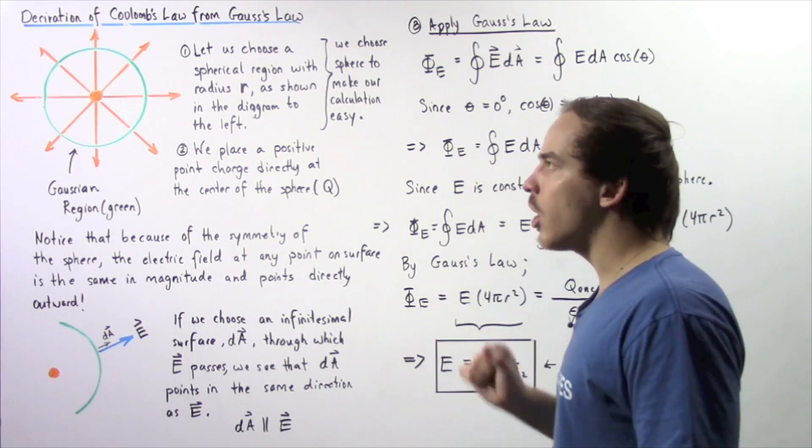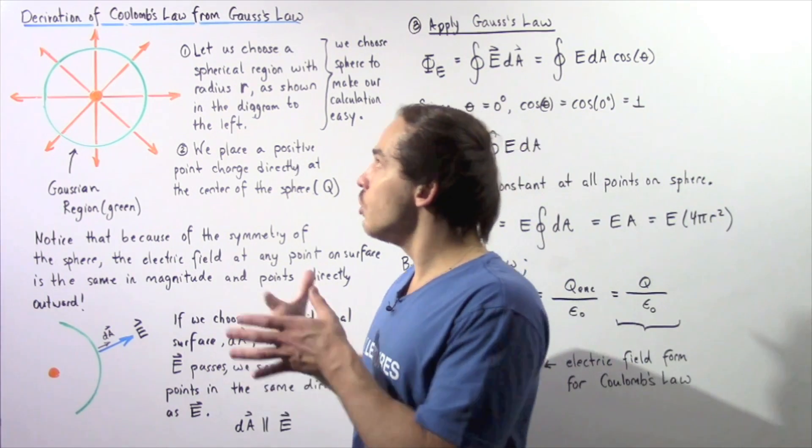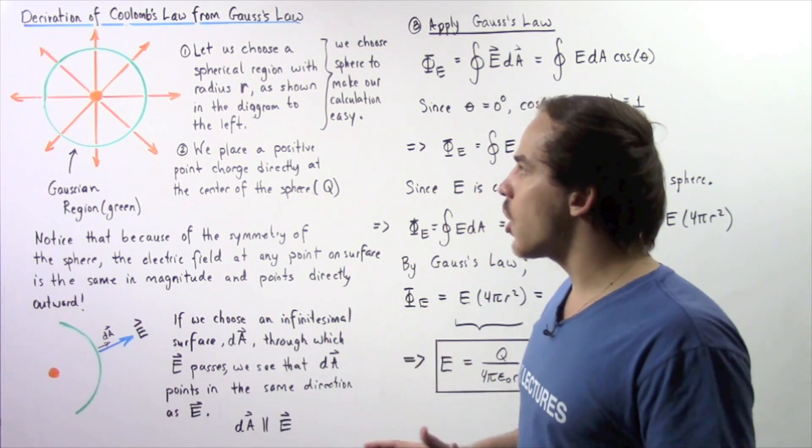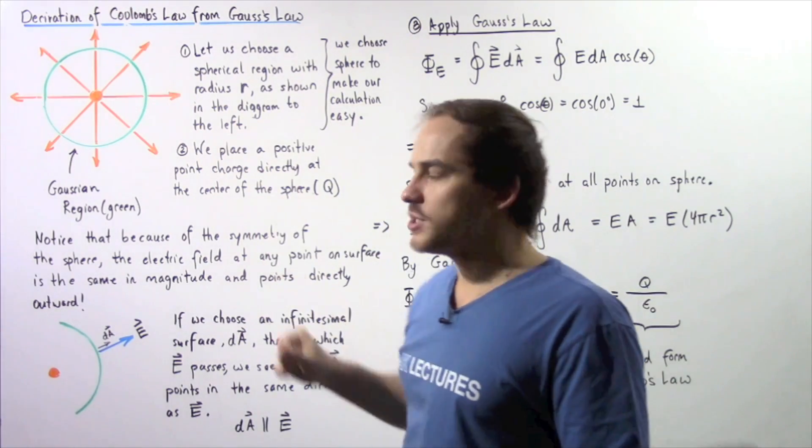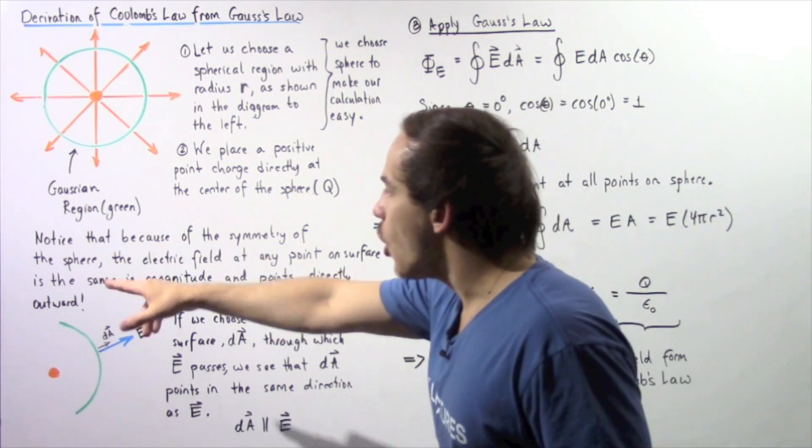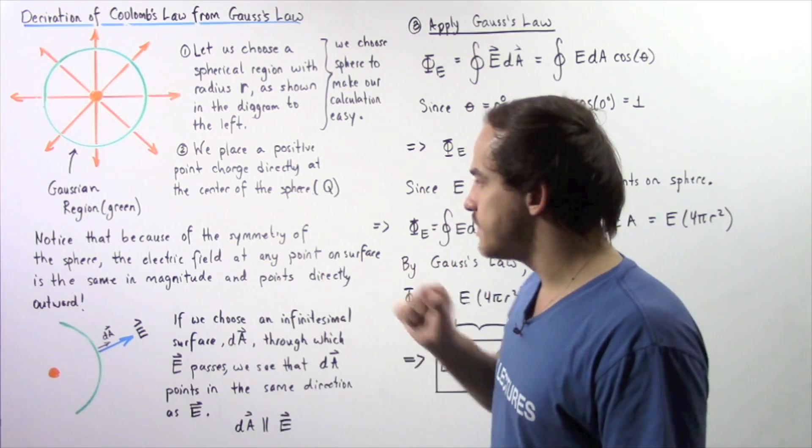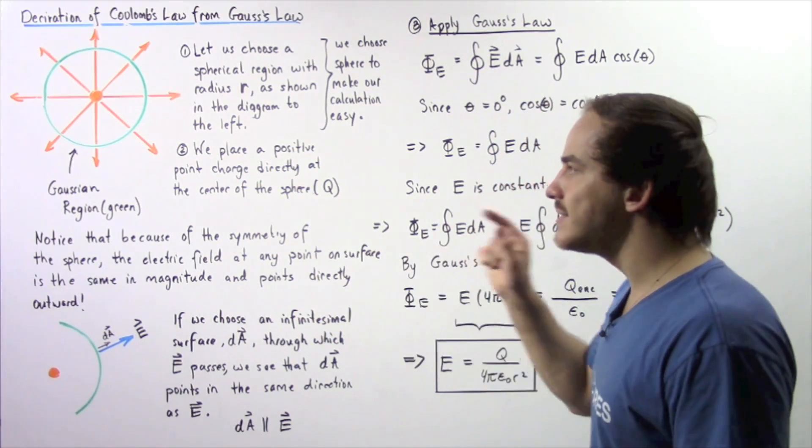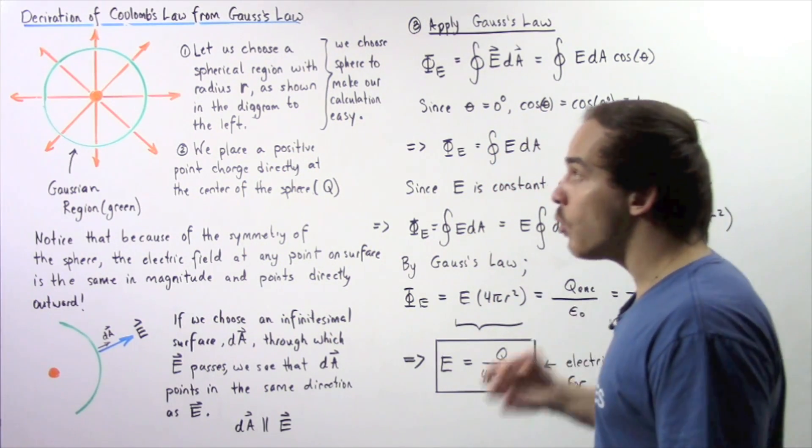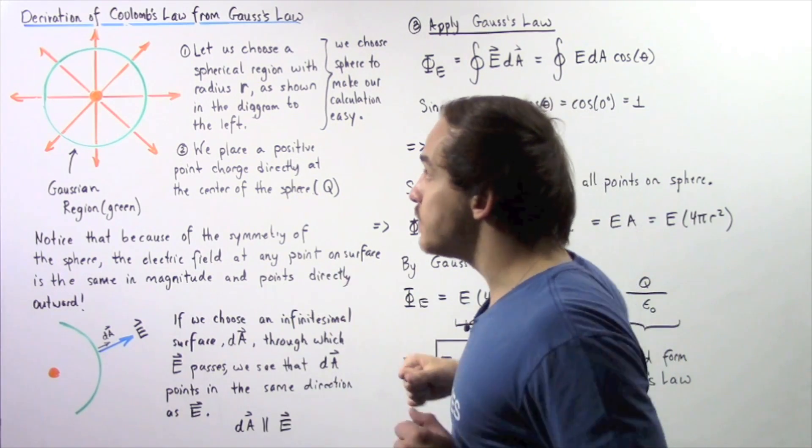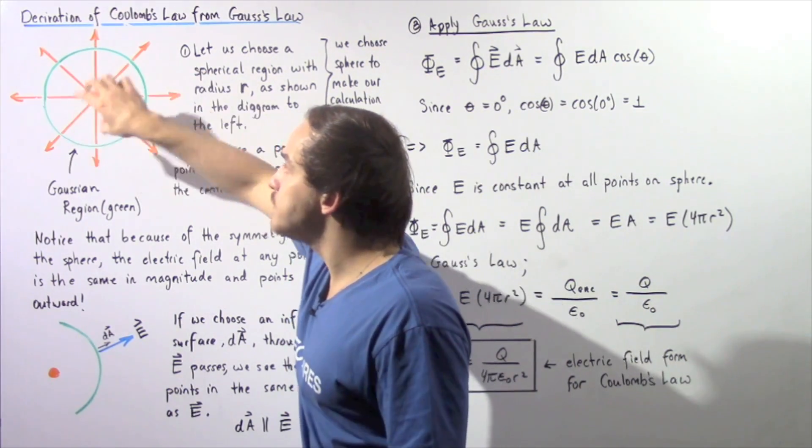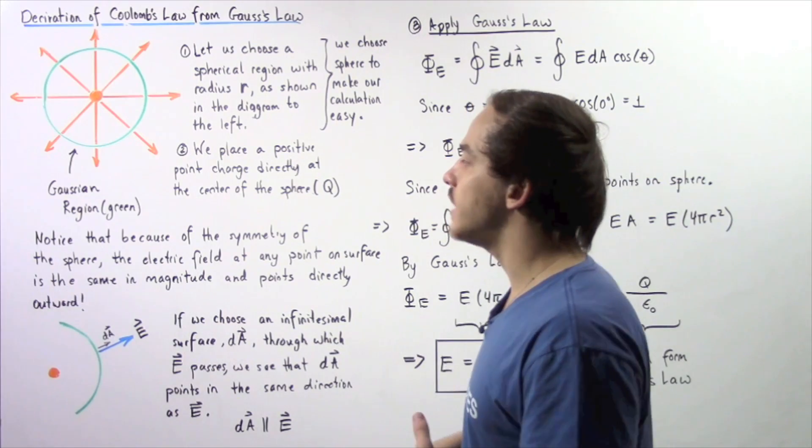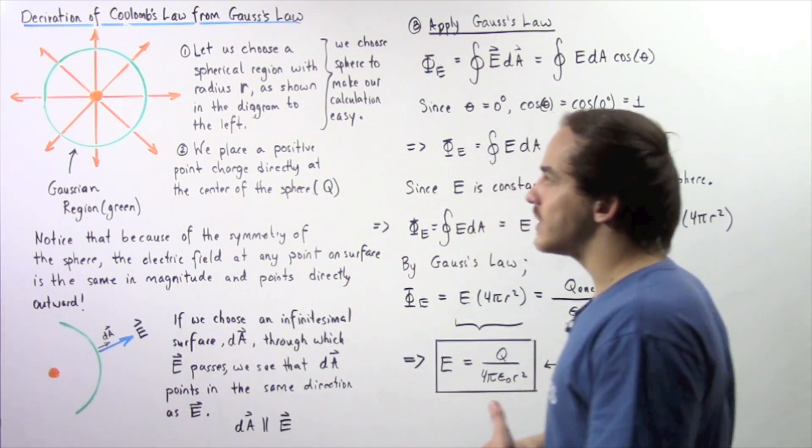Now, the reason we choose a point charge is because Coulomb's law is a relationship between electric fields produced by stationary point charges. So, we assume this is a stationary point charge. Notice that because of the symmetry of the sphere, the electric field at any point on the surface of our region is the same exact in magnitude and will point directly outward.